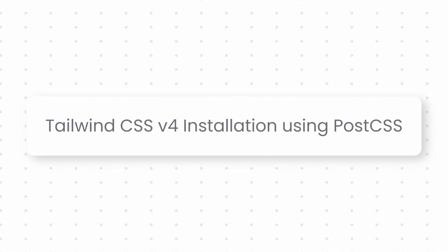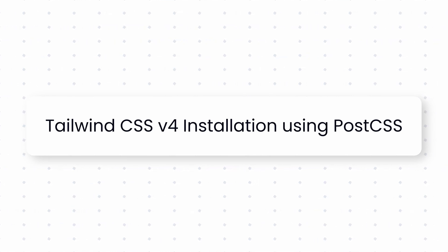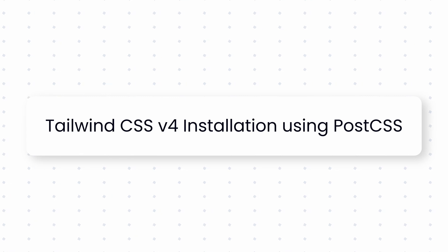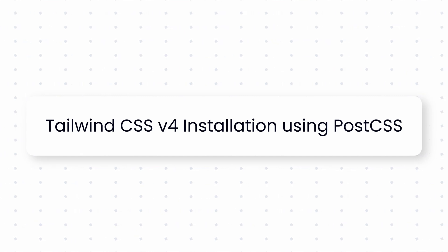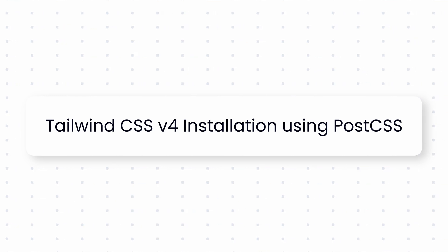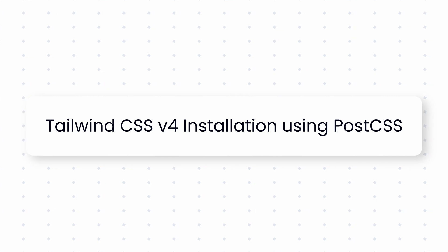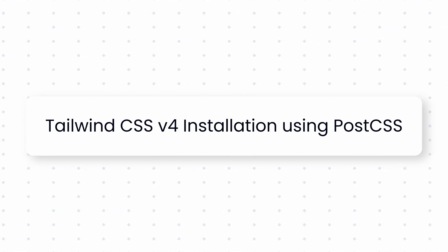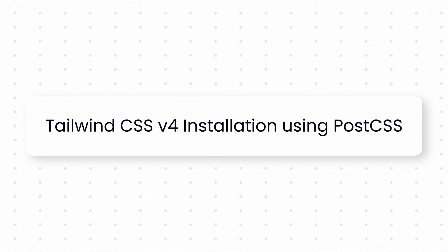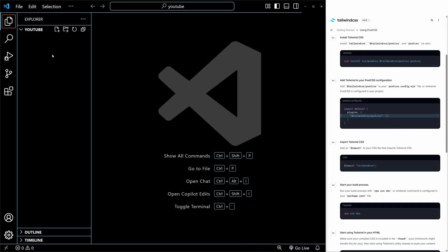Today we are covering how to install Tailwind CSS version 4 using PostCSS. While the official documentation is helpful, it doesn't provide a clear step-by-step guide, so I have simplified it for you. We will be setting this up in a vanilla project — just HTML and CSS files — without any frameworks like Next.js or build tools like Vite, since each setup has its own approach. This guide will help you understand the core process before applying it elsewhere. First, let's create an index.html file in the project folder.